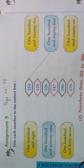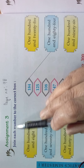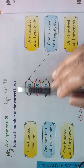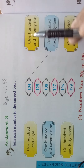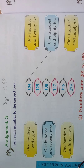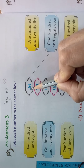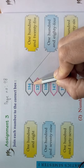Now take page number ninety-eight, children. In that, assignment 3 is there. Come, we will read the question: join each number to the correct box. These are all the numbers given. We should join each number to the correct box. One is done for you. This number — what is this number, children? One hundred and eighty-four.